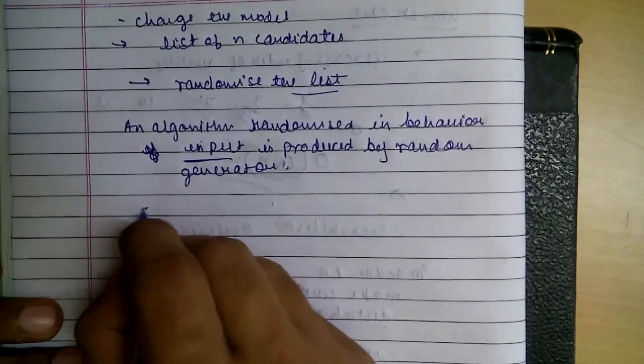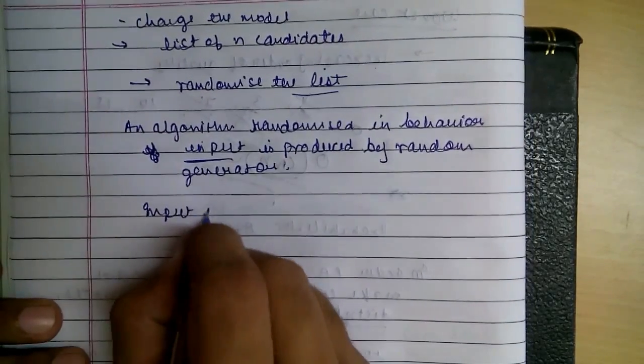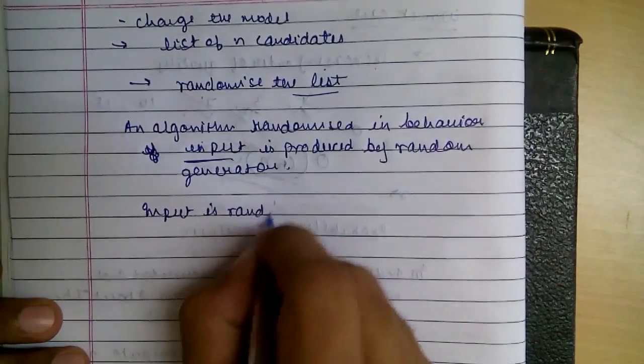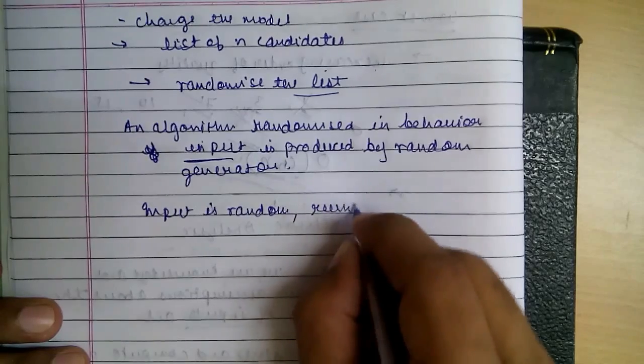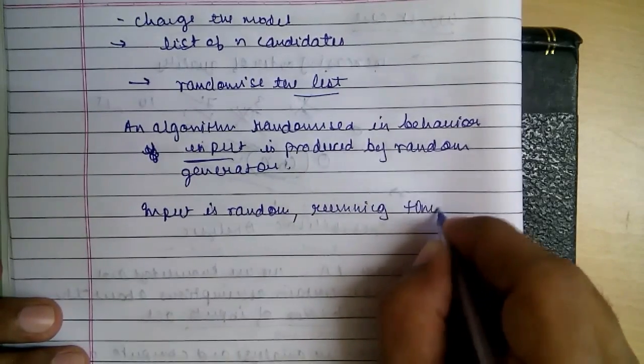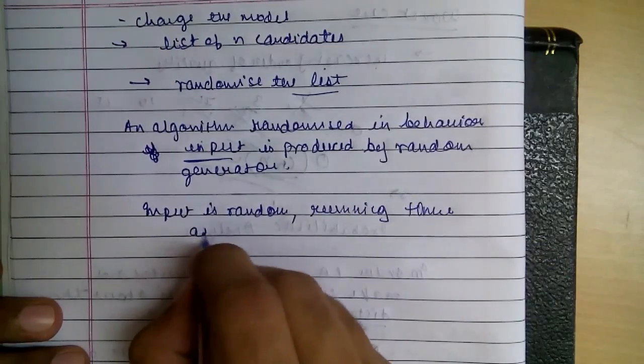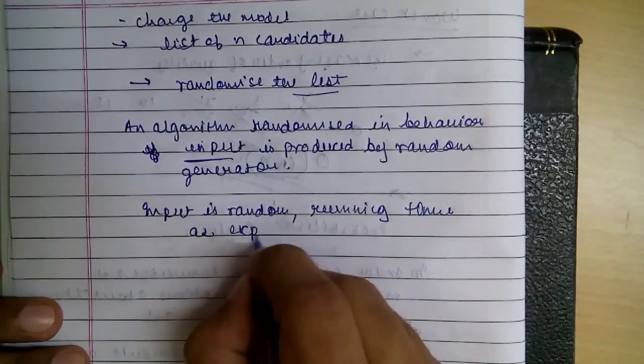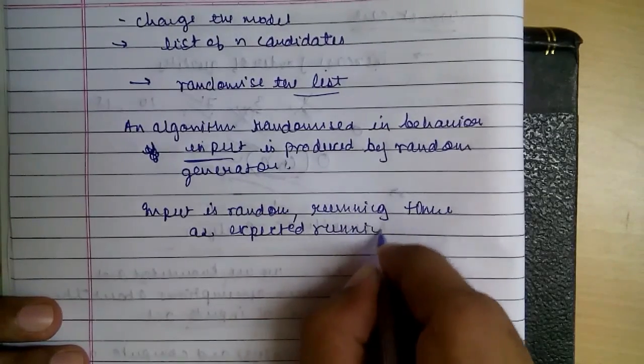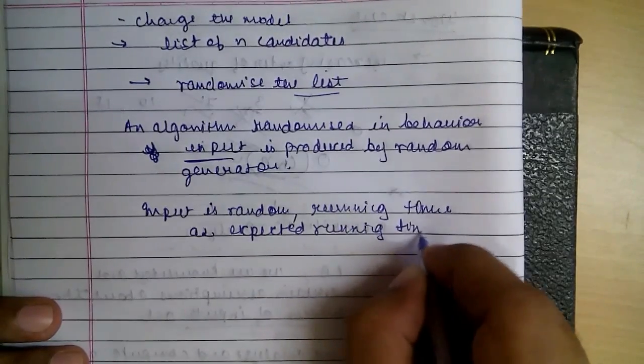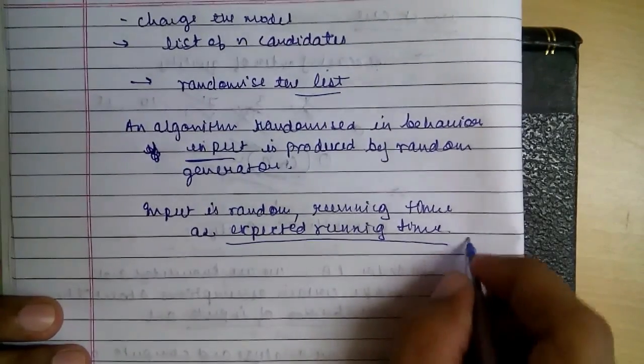When the input is random we refer to the running time as expected running time.